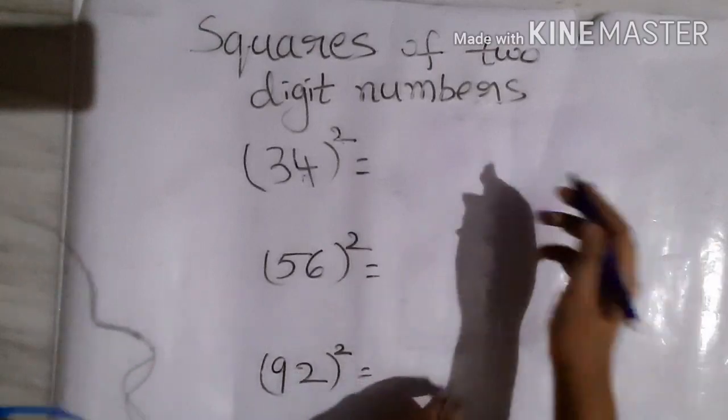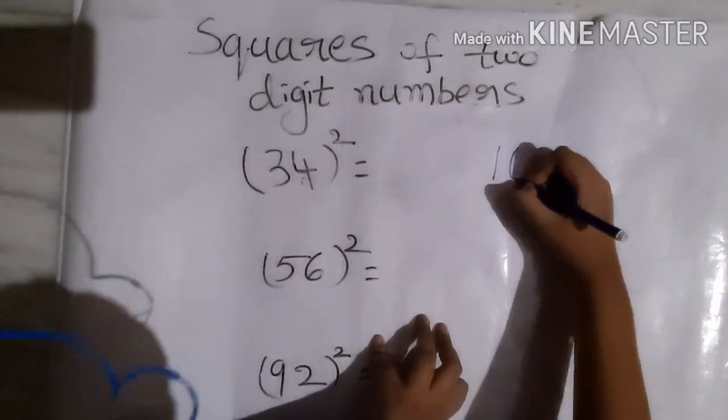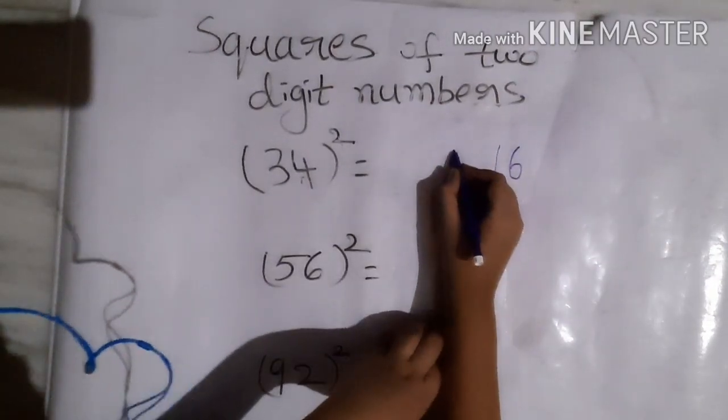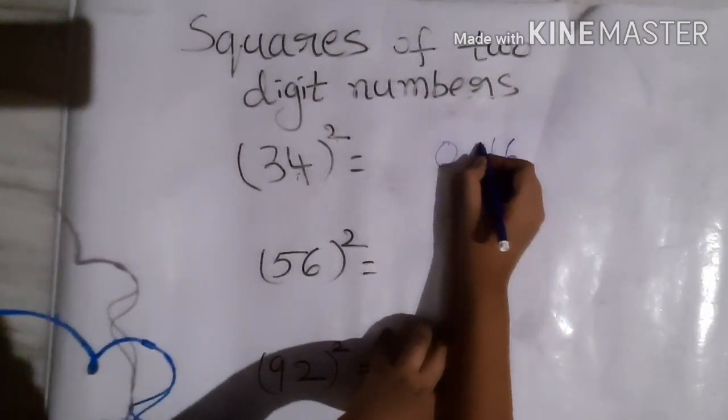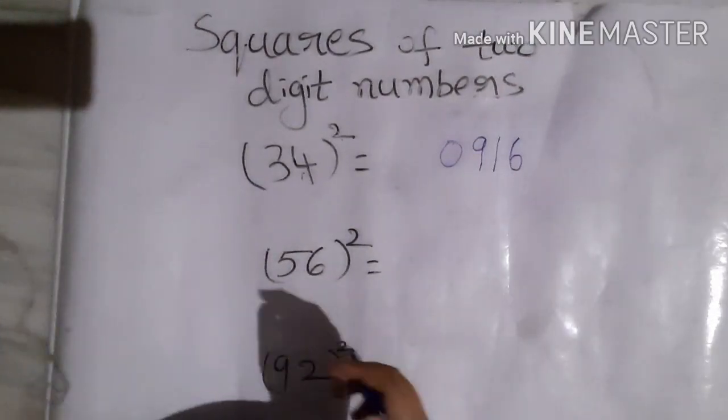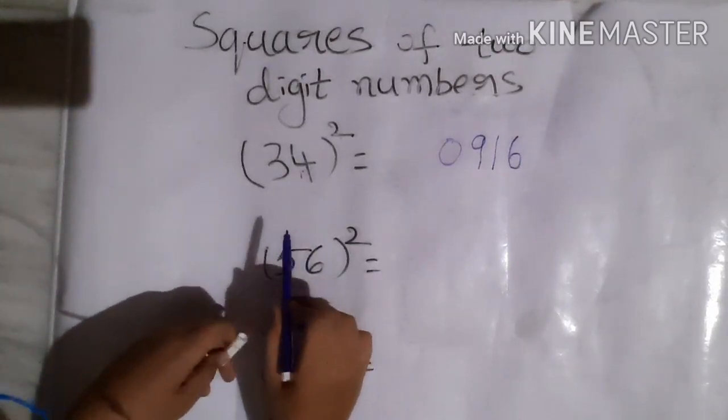4 squared is 16, and 3 squared is 9. Now multiply 3 and 4: 3 times 4 is 12, and 12 times 2 is 24.